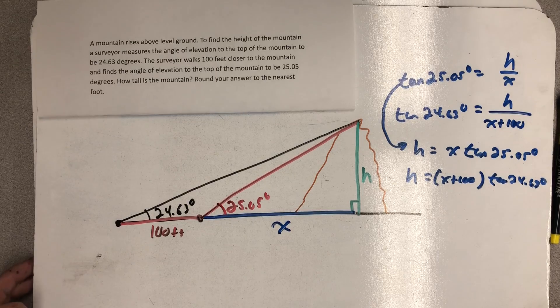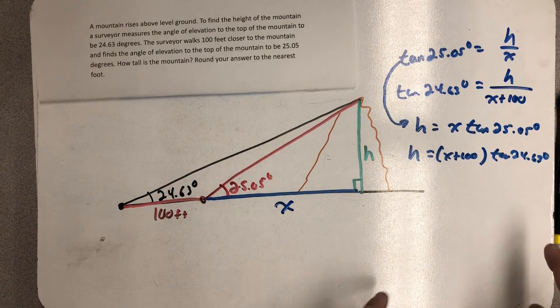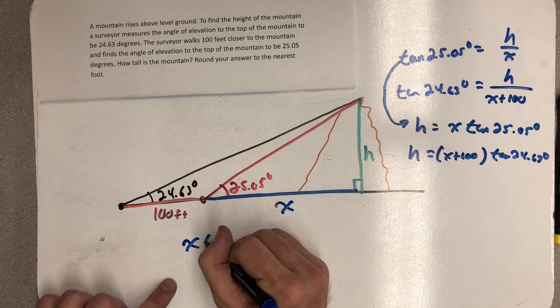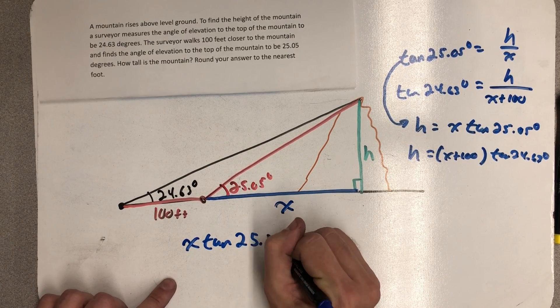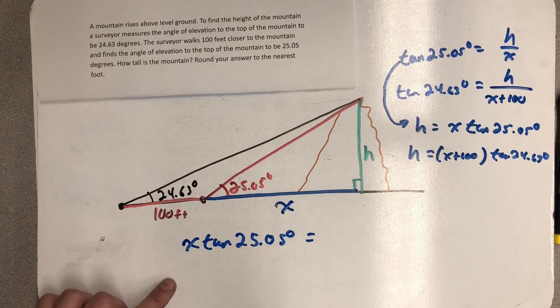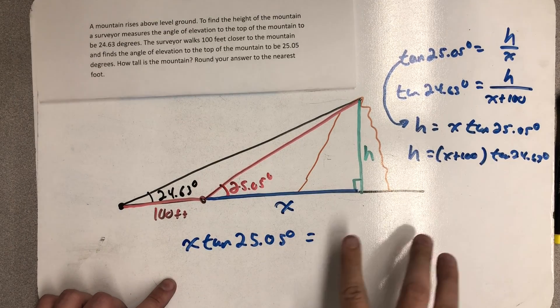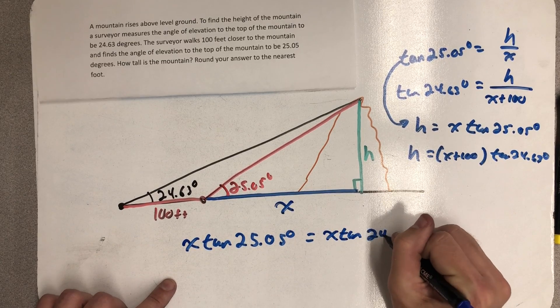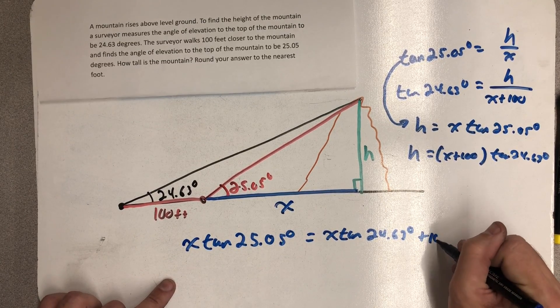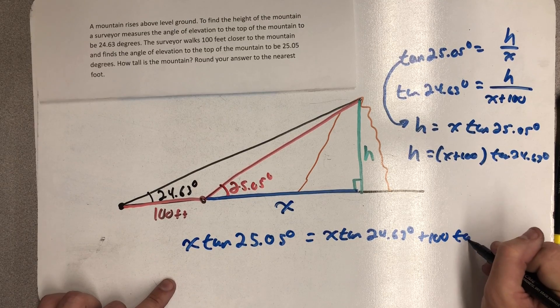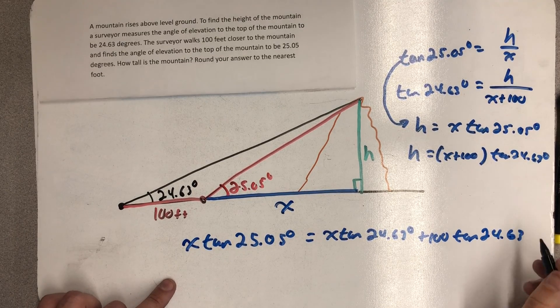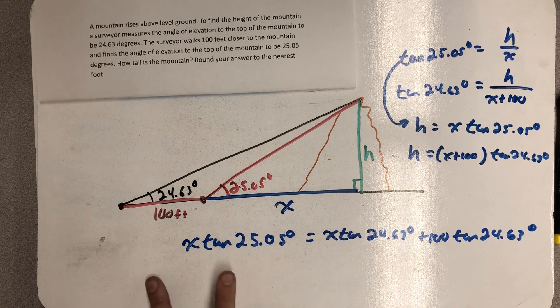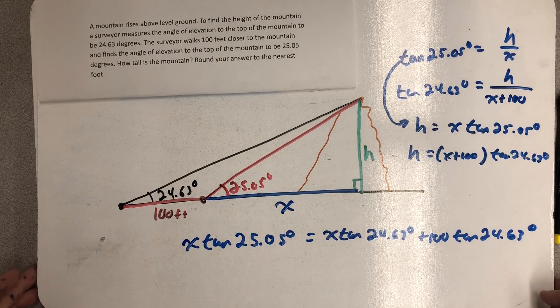I'm going to set those two equations equal to each other because they're both equal to h. Another way to think about it is I'm substituting this in for h. I've always liked to think about this as setting two equations equal to each other. And on this side, as I go to write it down, I'm going to go on and distribute. And notice I'm just writing the tangent down. I know that's a number, but I don't want a decimal approximation right now because I only want to round at the end of my problem. I'm going to get both of the terms with x's on the same side and then we'll solve it from there.